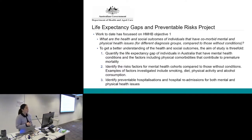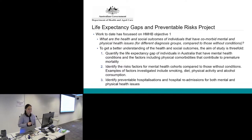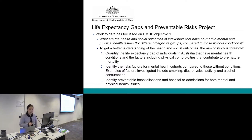In order to get a better understanding of health and social outcomes, one of the first aims is to quantify the life expectancy gap of individuals in Australia, including the factors of their physical comorbidities. Another aim is identifying risk factors for these cohorts, which might include smoking, diet, physical activity, or alcohol consumption. And lastly, we also hope to identify preventable hospitalisations and hospital readmissions for both mental and physical health issues.